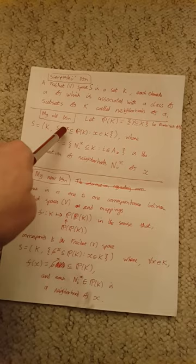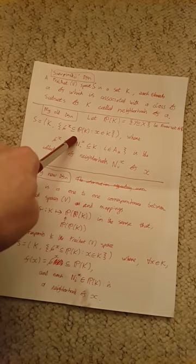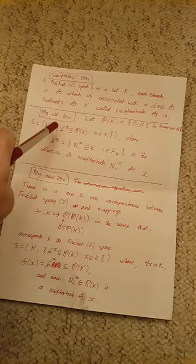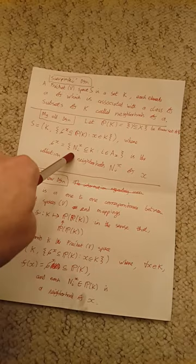This is the collection of all subsets of K. So these ζ(X), they are collections of subsets of K, and we have one of those for every X. Essentially, these ζ(X) are the collections of neighborhoods of X.